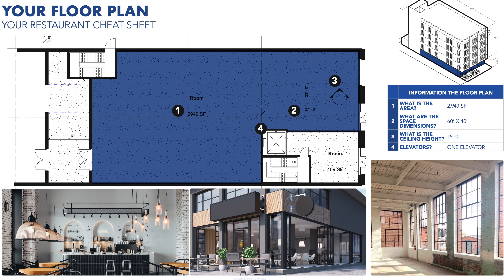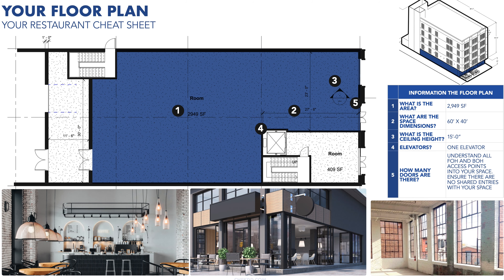All your kitchen steam, smoke, and sizzle need a route to escape — that's where the vertical shaft comes in. It's like a secret passage that whisks away cooking aromas. The size and location of that shaft are crucial: it needs to reach all the way up to the building's top without any detours out the front or side, because you're cooking beneath folks living or working upstairs. When scoping out your space, keep an eye out for that vertical shaft.